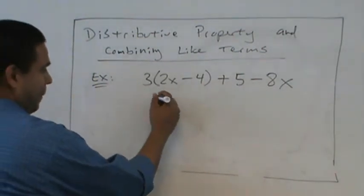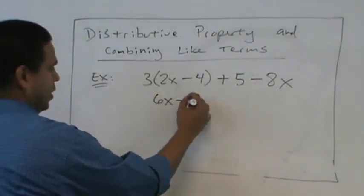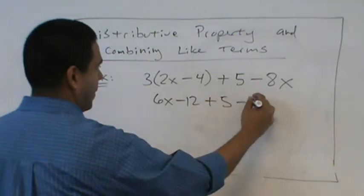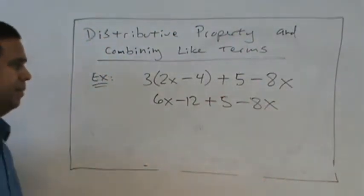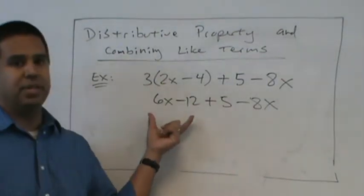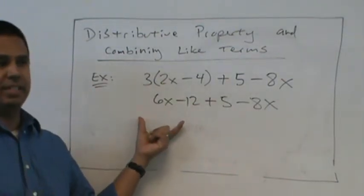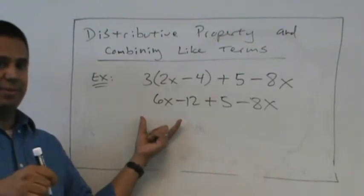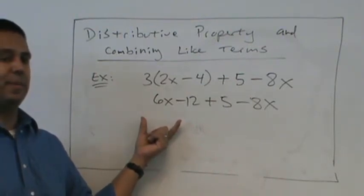So three times two? Six. Six X. Minus 12. Don't you need to put it in parentheses also? No. After we distribute, parentheses go away. Awesome. Okay. Write that down so you remember. After we distribute, parentheses go away.